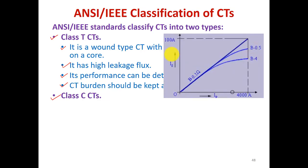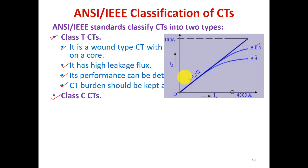The typical magnetizing characteristics of Class T CTs show a plot of Is versus Ip. The characteristics are plotted for three values of B: B = 0.1, B = 0.5, and B = 4. For B = 4 the CT is more saturated. Therefore it is always recommended that the performance of Class T CTs be determined based on test.